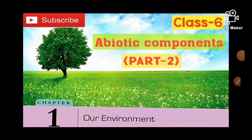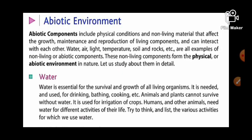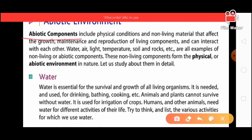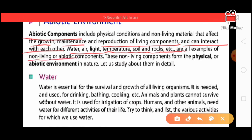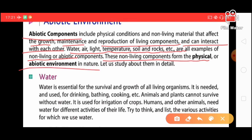In this video we will study about abiotic components. Abiotic means non-living things. They include physical conditions and non-living materials that affect the growth, maintenance, and reproduction of living components. Non-living things matter a great deal — without non-living things we cannot survive. Examples include water, air, light, temperature, soil, and rocks. These are very necessary for life's existence and survival, forming the physical or abiotic environment in nature.